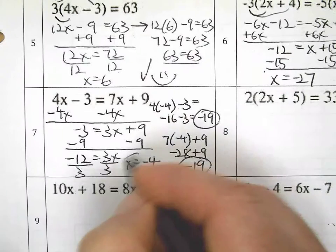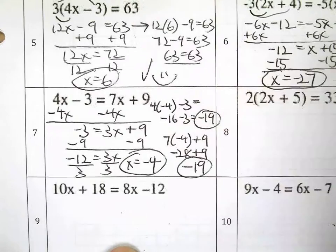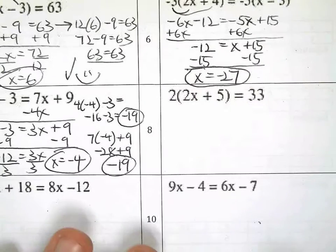Hopefully you see what I'm doing here. Negative 28 plus 9 is negative 19. Since those are equal, that is true and that makes negative 4 the correct answer.